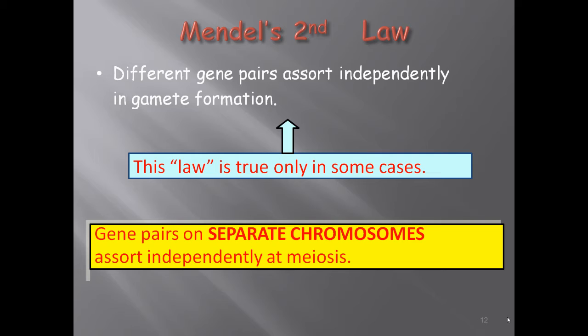Mendel's second law states that different gene pairs are sorted independently during gamete formation. This law is true only in some cases — specifically, gene pairs on separated chromosomes are sorted independently at meiosis. This independent assortment at meiosis is essential for transmitting characteristics from one generation to the next.